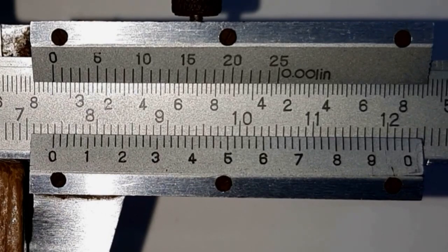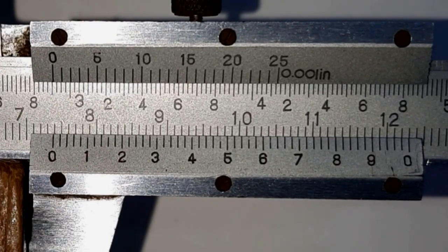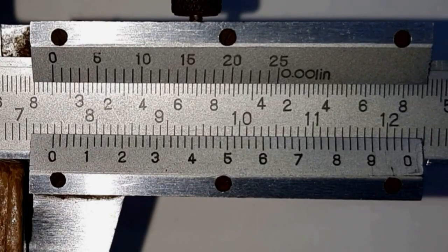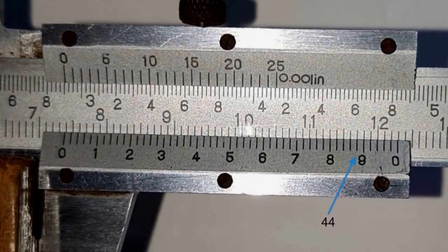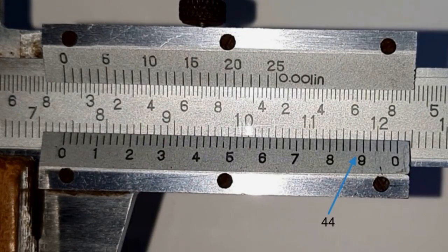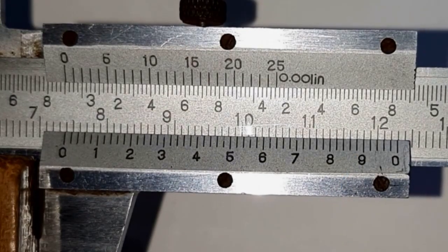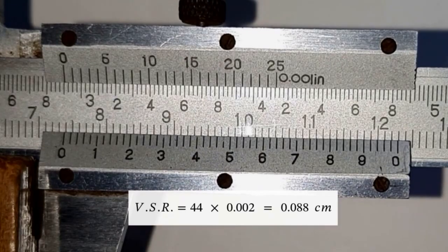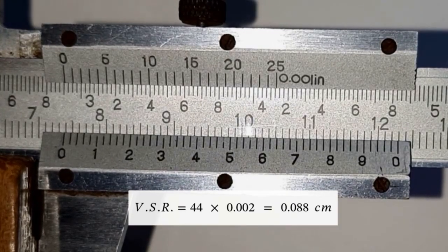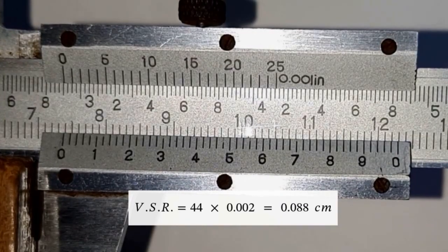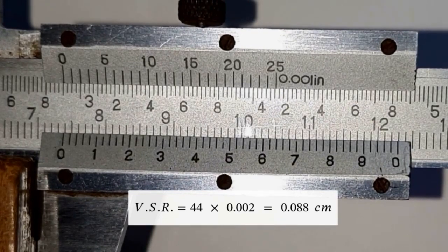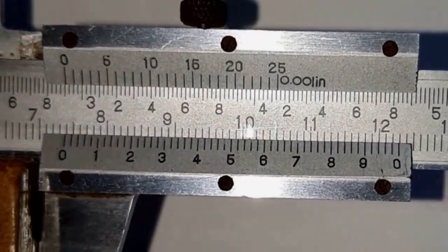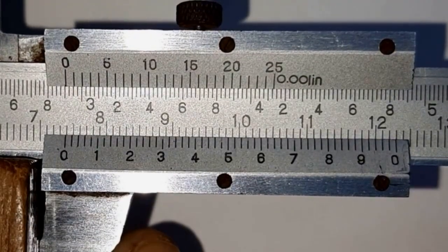The vernier scale is read by finding the division on vernier scale that exactly coincides with any division of the main scale and noting down its number, which in the present case is the 44th division matching with the main scale. So, our vernier scale reading is 44 multiplied by 0.002, which equals 0.088 cm. Hence, the final reading of the length is calculated as main scale plus vernier scale reading.